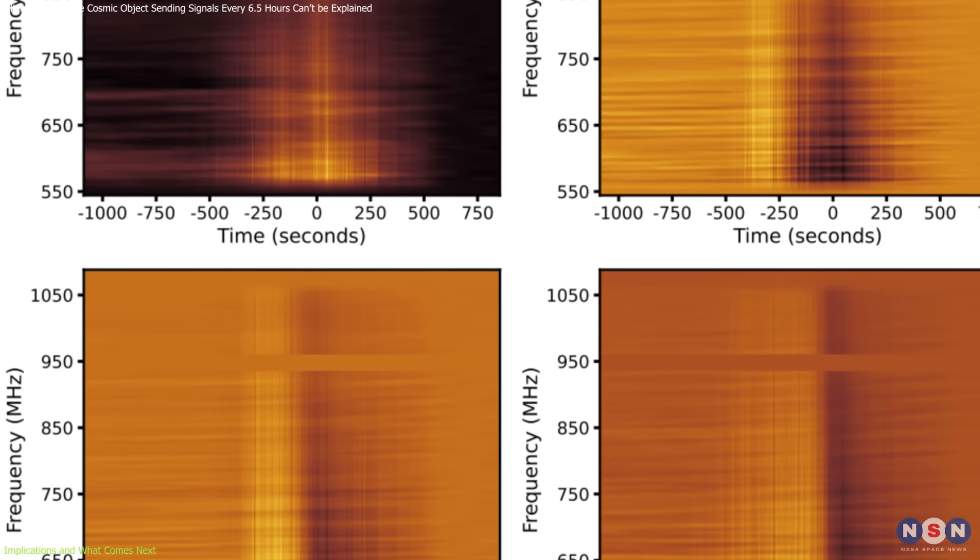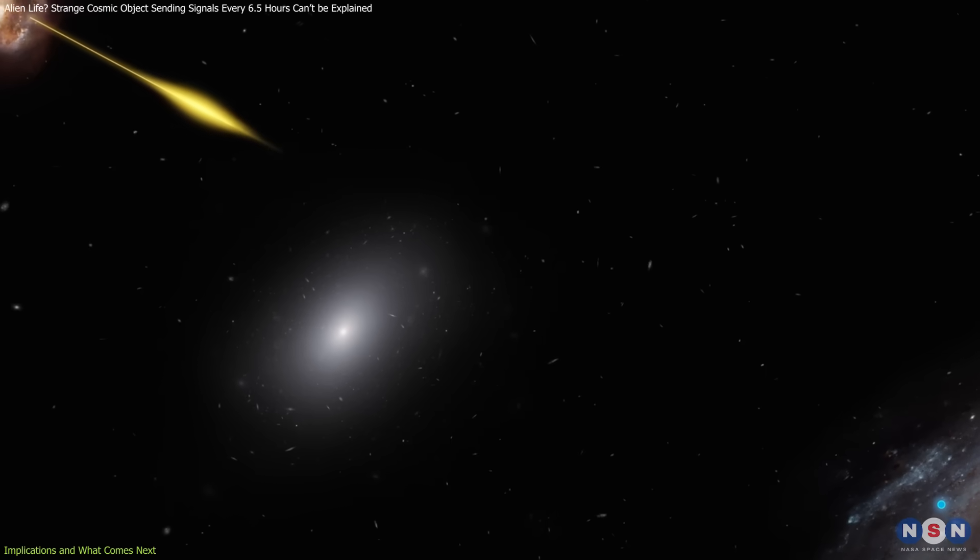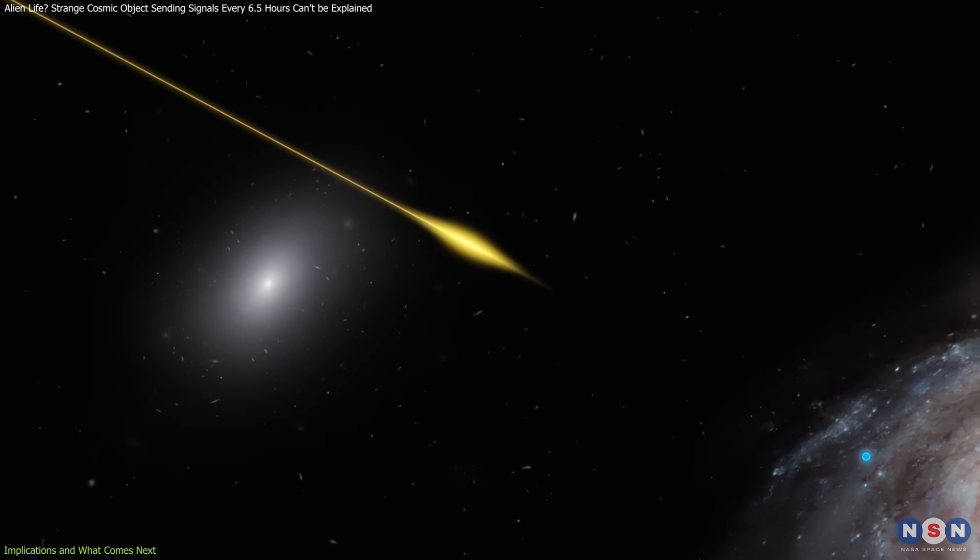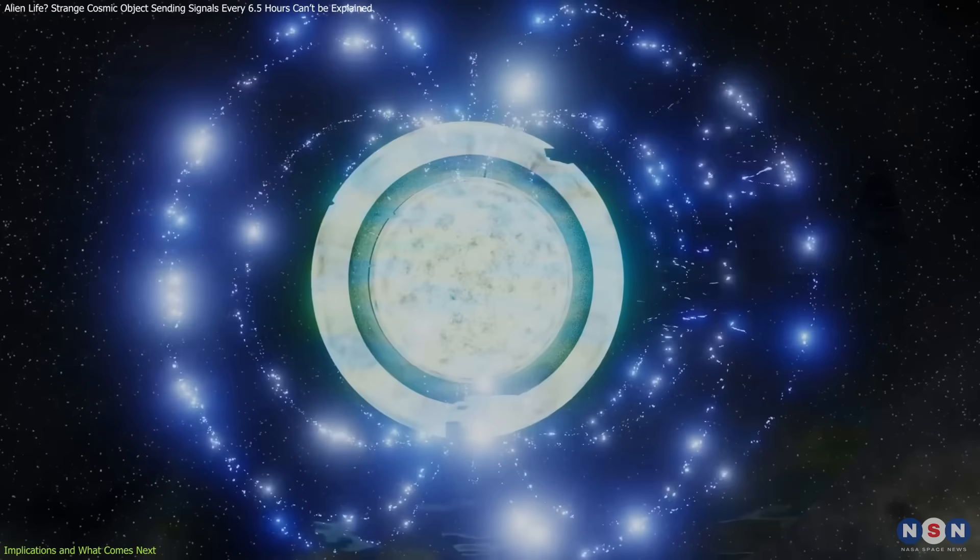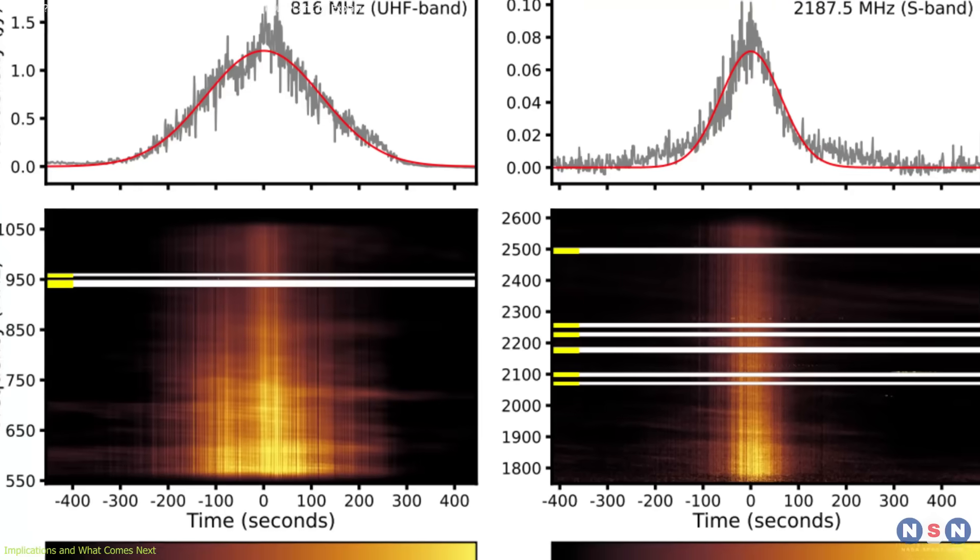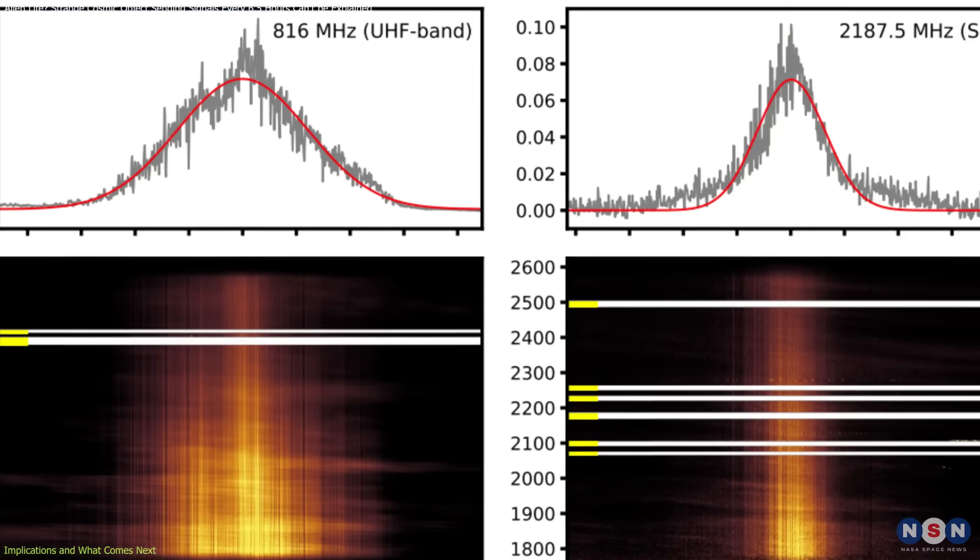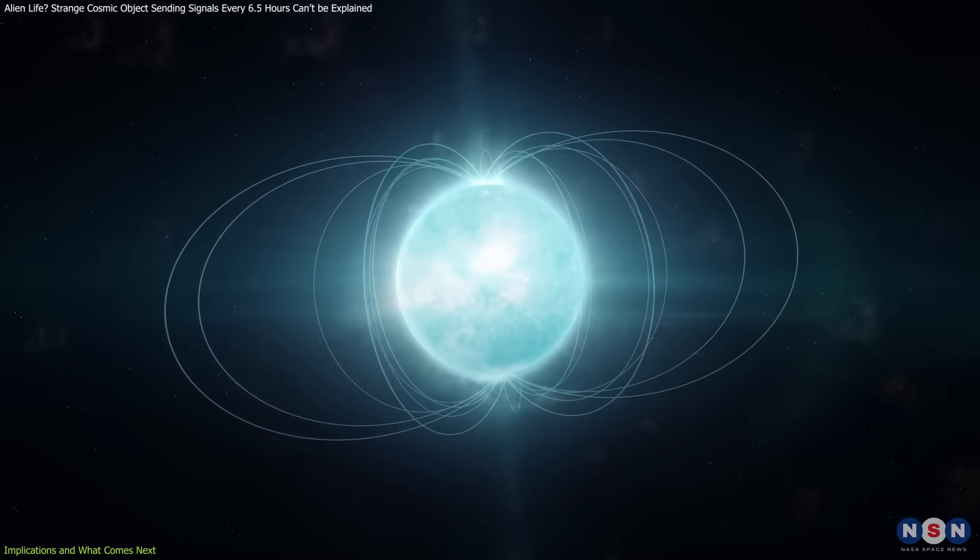One of the most intriguing possibilities is that this object could help us understand fast radio bursts, mysterious high energy radio signals that originate from distant galaxies. Some scientists believe that magnetars could be responsible for certain FRBs, and if this object is indeed a magnetar, it could provide a missing link between these enigmatic bursts and their sources.